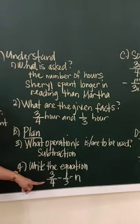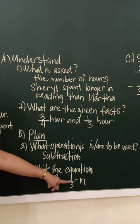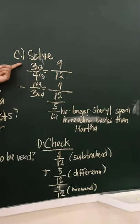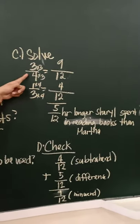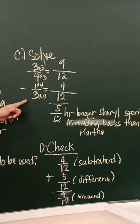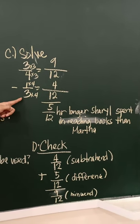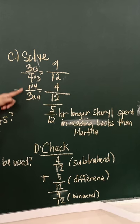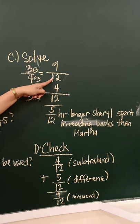So this is the equation: three-fourths minus one-third equals N. So the next step now is we are going to solve. Since three-fourths and one-third are dissimilar fractions, we are going to write them going down. Three-fourths minus one-third.